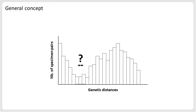However, in many cases, the distributions of the intraspecific and interspecific distances will overlap, thereby hiding the barcode gap to a certain degree. Defining a threshold based on the barcode gap in such cases is more tricky and subjective.